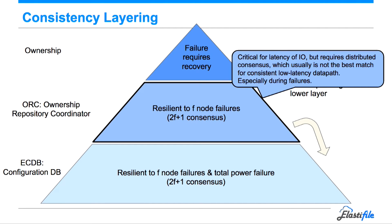This specific ORC layer's consistency is essential for the correctness of the file system, because it says who's the owner of what. If it doesn't say that correctly — if it says there are two different owners — we're going to get inconsistency. On the other hand, it is resilient to node failures. This is a classical consensus situation. The problem is that consensus algorithms are not very good at low latency and consistent performance, especially during failures.